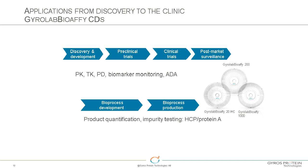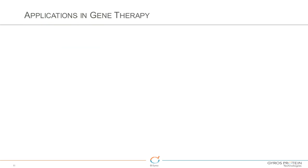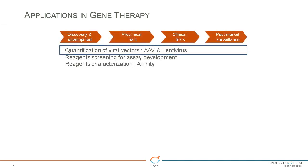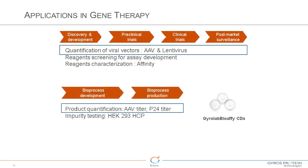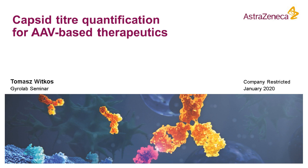Gyrolab is extensively used in drug development. Bioanalytically, it's used for PK, biomarker, and ADA. In bioprocess, it's used for impurity testing and product titer. This leads us to today's topic — the Gyrolab is being extensively used in cell and gene therapy applications, including both AAV and lentivirus drug development. The low volume and fast turnaround really suit this exciting new area. I will now pass you on to Thomas, who will give his specific AAV presentation.